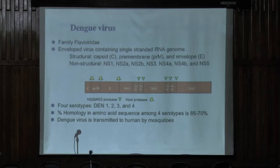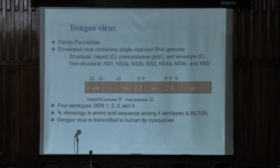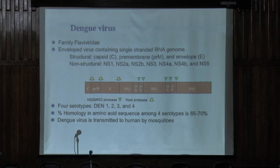You all know dengue, and one of the advantages of giving a talk here is that you do. Dengue is a flavivirus — there are four of them. They're related to each other but quite distantly, about 35% different. And you know the story of sequential dengue infections and enhanced disease.